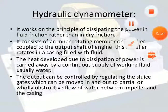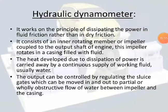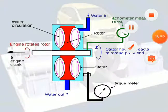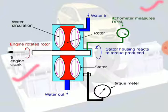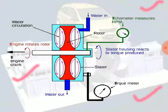What is a hydraulic dynamometer? Looking at the diagram: a tachometer measures RPM, the stator housing reacts to the torque produced, and the engine rotor receives the output power. Water circulates in and out of the unit. There are rotors connected to the output shaft, and the water inserted causes the rotor and stator to interact, developing engine power which is transferred to the engine shaft.